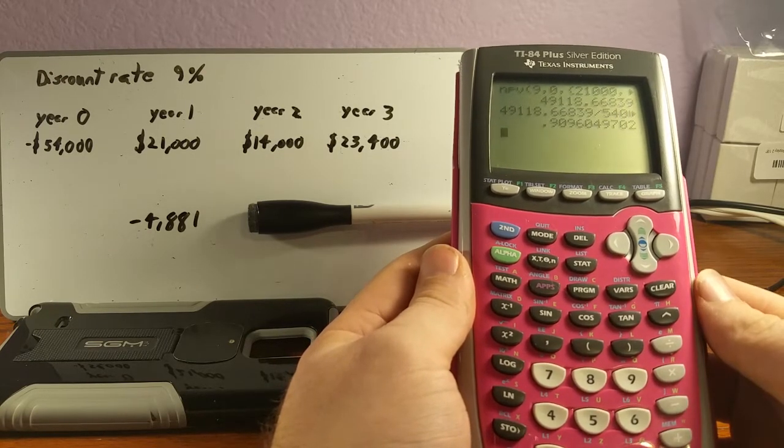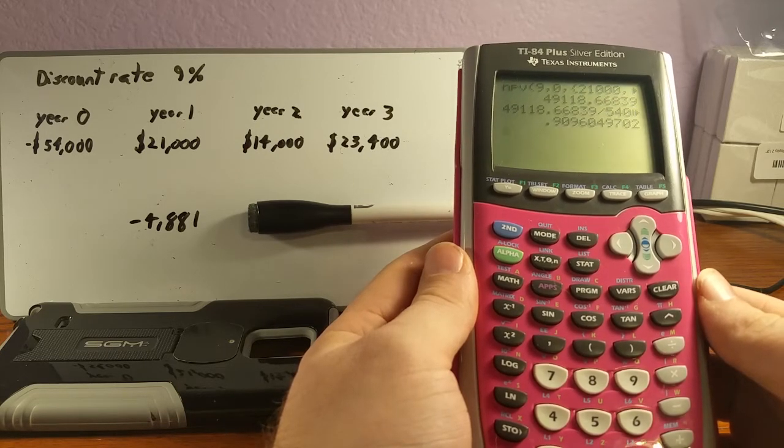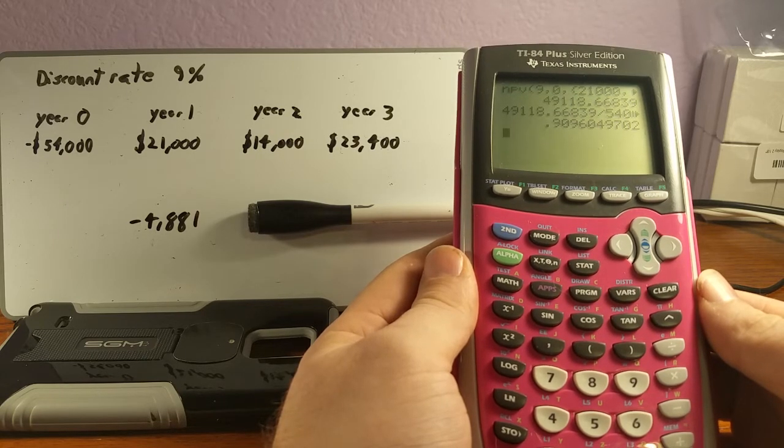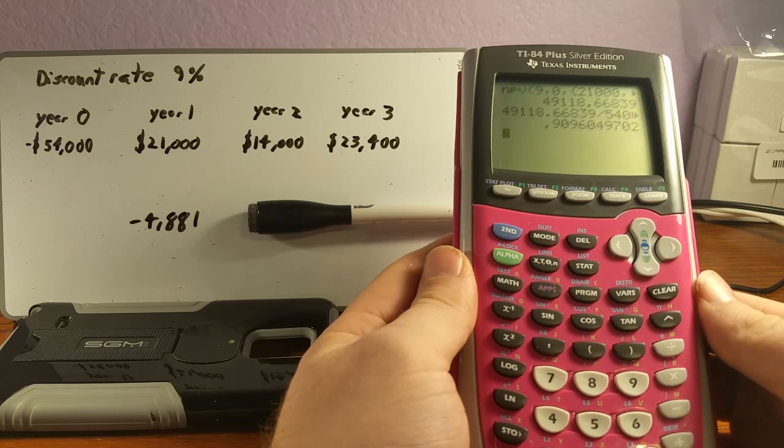In this case, it's 0.91, but the takeaway here is that it's less than one. So we generally can say that we don't want to take this project. If it was one point something, then we would want to take it.